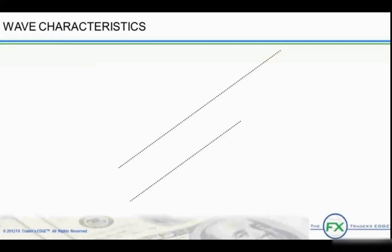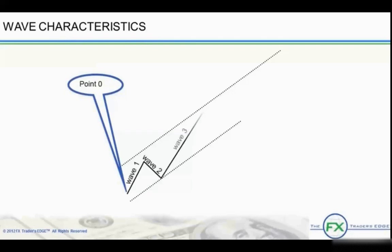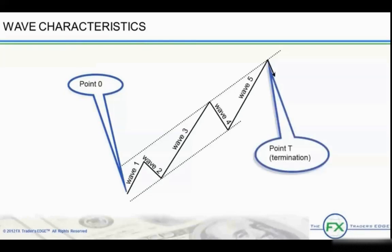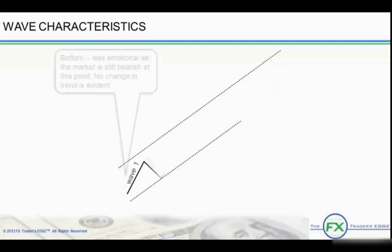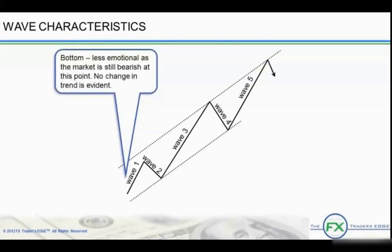Wave characteristics are a direct reflection of human market behavior. Wave personalities exist at every level of the wave count. We call the start of wave one point zero; where the five-wave impulsive sequence ends is called point T for termination. Between point zero and the end of wave one, the market is still bearish. Wave one is always part of a basing process. There are no momentum clues yet for a change in the trend. The price action is less emotional with little or no volatility as the crowd is still bearish at this point, so market participants are still in sell mode.